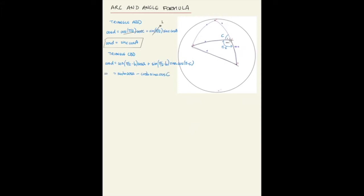These are two expressions for cosine d. Equate them both and you find sine c cosine big A equals sine of little b cosine of little a minus cosine of little b sine of little a cosine of big C. That's the angle and arc formula.